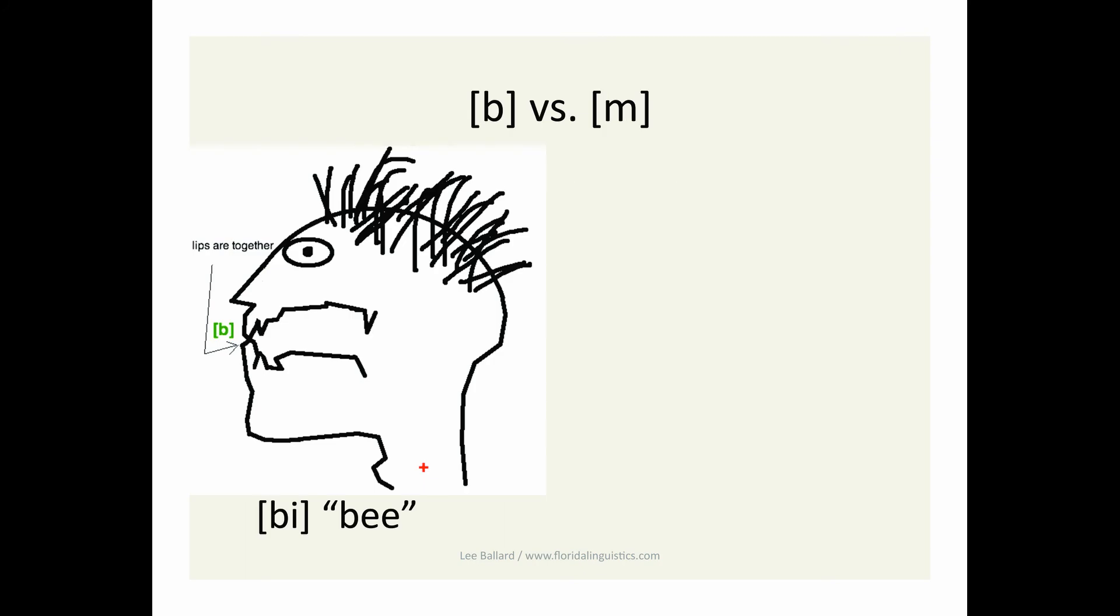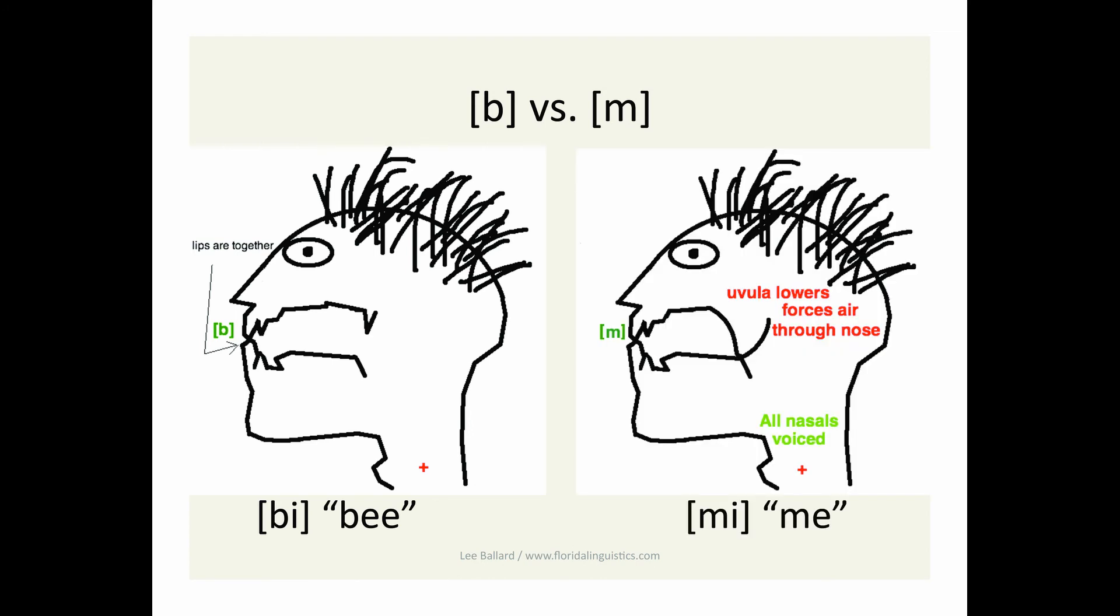Here's Steve pronouncing the voiced bilabial oral stop in B. What happened when he said me? Answer, the velum dropped down and made the sound nasal. This is what makes it possible to hold the sound.